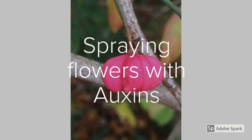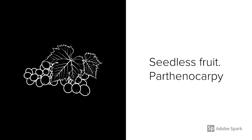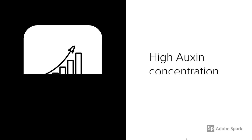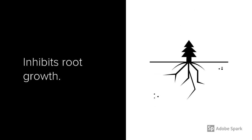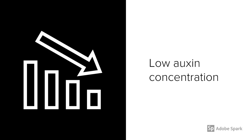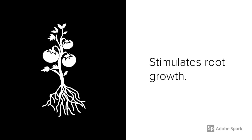Auxins have many uses. For example, spraying flowers with auxins is a way of producing seedless fruit — this is known as parthenocarpy. The effect auxins have on plants depends on their concentration and where they're acting. High auxin concentration will stimulate shoot growth but has the opposite effect on roots — it inhibits or prevents root growth. Low auxin concentration will inhibit stem growth but stimulates root growth.